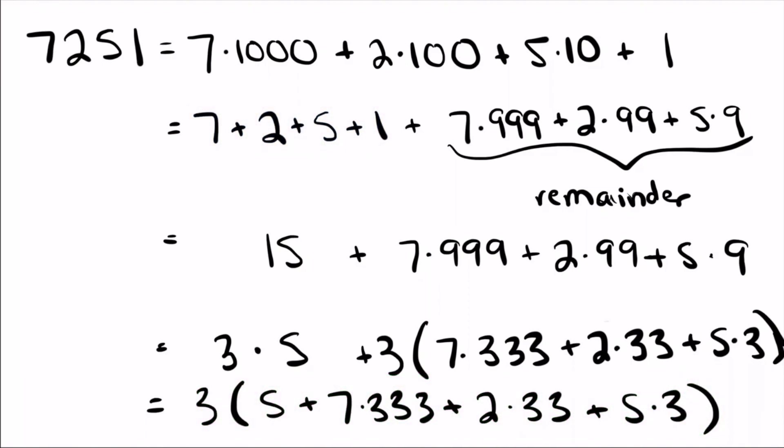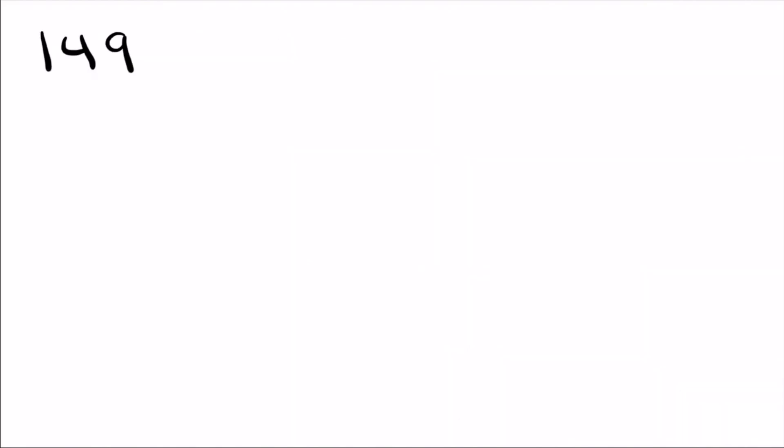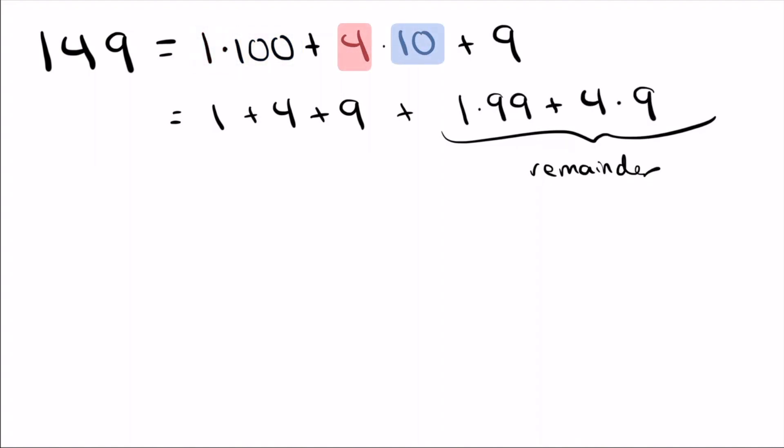Let's go ahead and do another quick example where this doesn't work, where the number is not divisible by 3. So let's take 149. If you take your calculator and you check that, you'll see that is not divisible by 3. But let's try the same thing. So the 1 here means 1 times 100. The 4 means 4 times 10. And the 9 just means a 9. I said I want to take the digits and add them up. But that's going to go ahead and leave me again with a remainder. And what is my remainder? I have 99 1s left. I have 9 4s. And I already used up my 9 at the end.